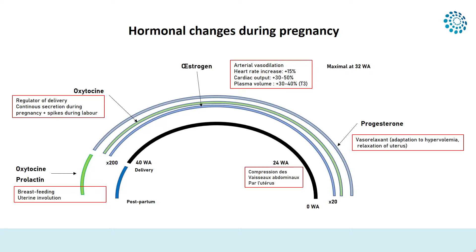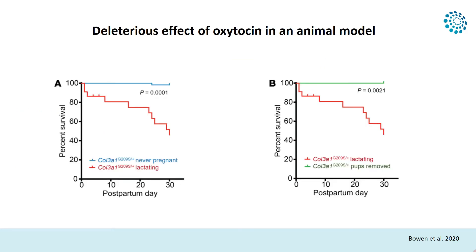Oxytocin is also present during early postpartum and throughout lactation to favor contraction of the mammary glands. Experimental animal model data suggest a negative effect of oxytocin in mice. Mice with an experimental model of vascular EDS that are lactating have increased mortality compared to mice that have never had babies. When pups are removed to stop lactation, mortality stops. The authors, Haldins' group, concluded that oxytocin has a deleterious effect. However, this is an animal model, and it's not known if this can be extrapolated to humans.